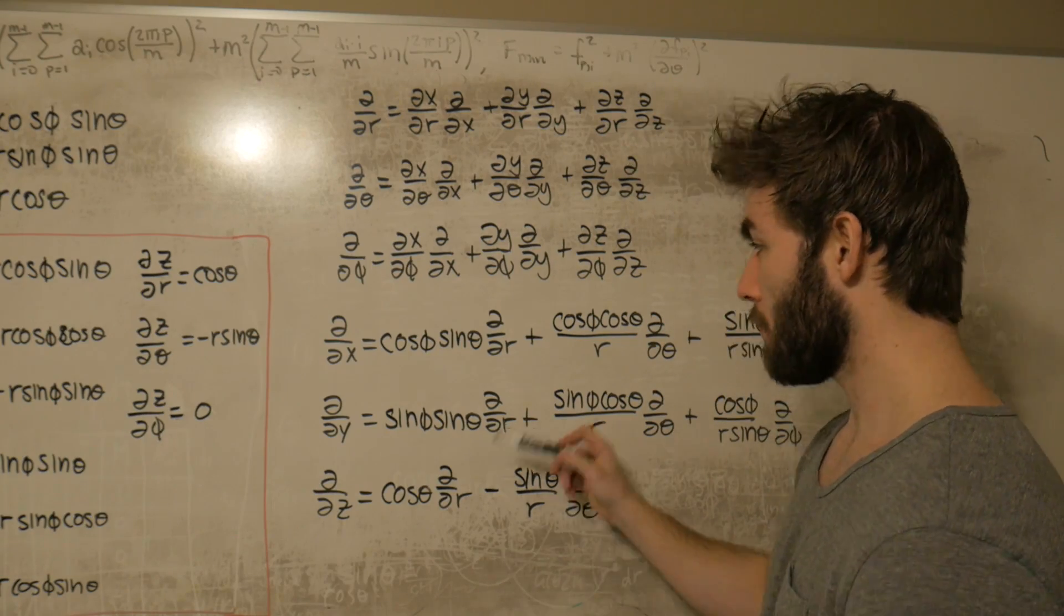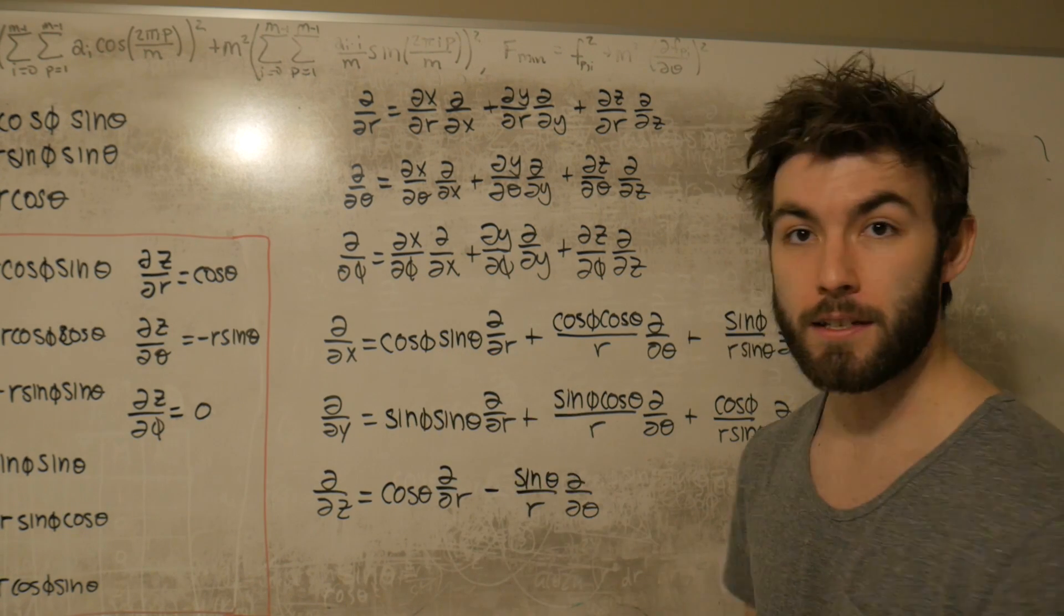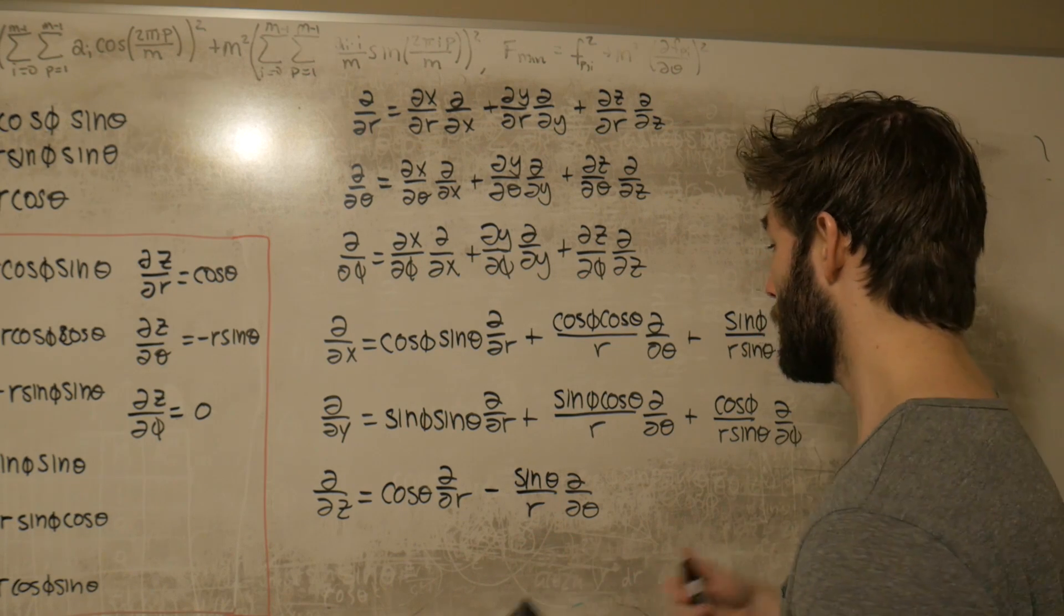Having said that, after going through all of that trouble, this is the result you should get for dd/dx, dd/dy, and dd/dz in terms of r, theta, and phi.